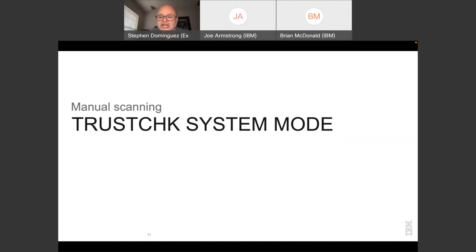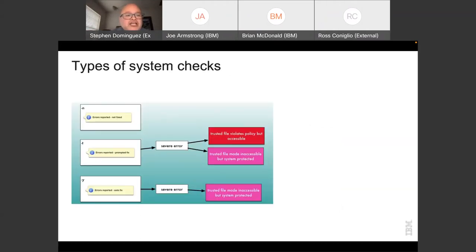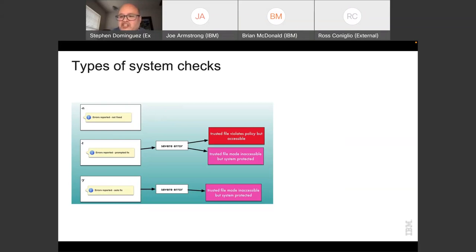In system mode, you can check a single file or all files in the database. Three basic options: dash-n checks and reports errors without changing anything; dash-t prompts the user to fix each error found; and dash-y runs the check and automatically fixes all errors found. Be careful — a severe error means a cryptographic failure, where Trusted Execution interprets the file as potentially malware. Correcting a severe error makes that file inaccessible, which is intentional behavior for a malware prevention tool.